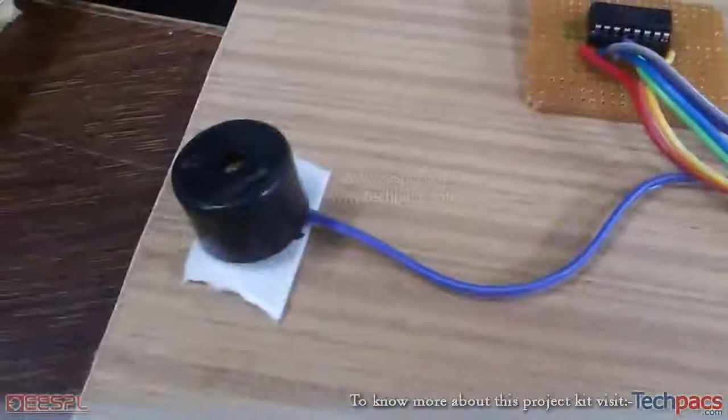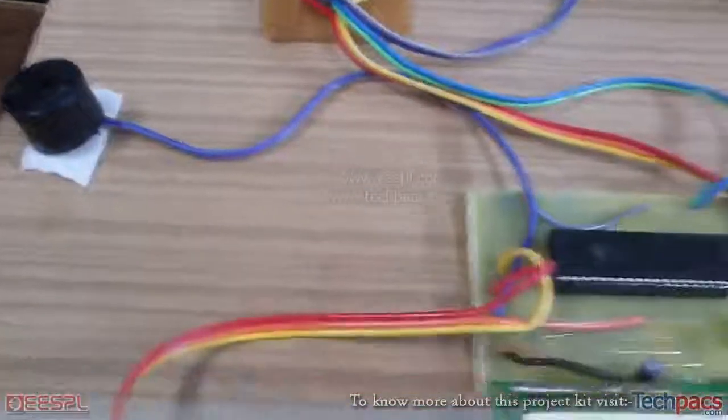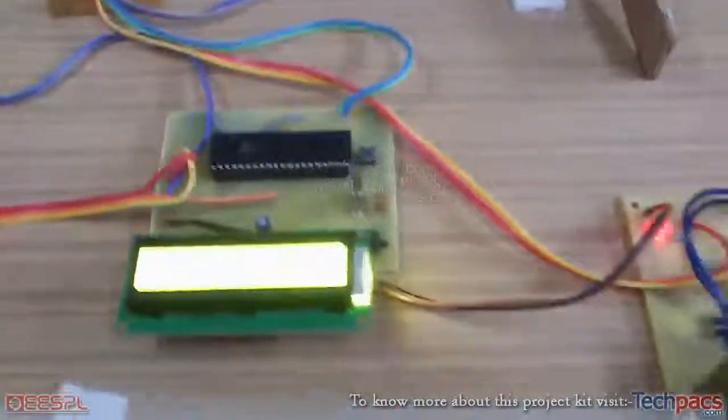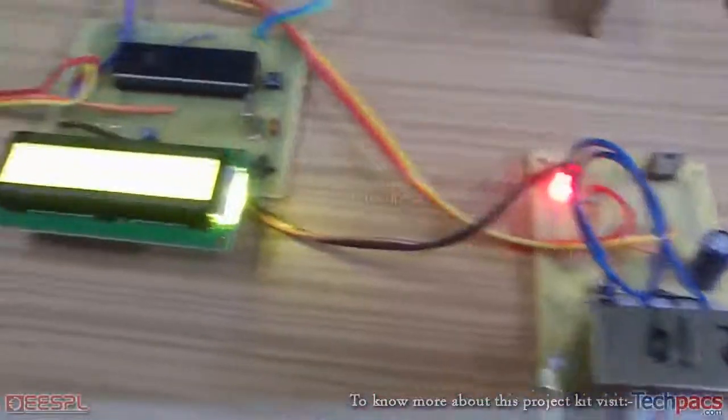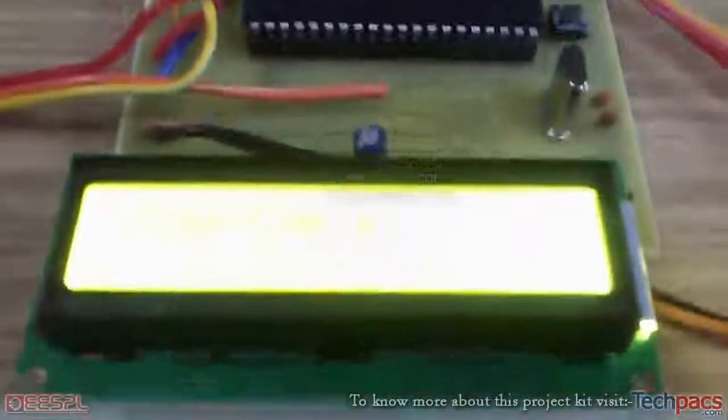A buzzer is used to alert in case of wrong access or the wrong card, and this power supply unit is used to supply 5 volts DC to the complete section. So the LCD is displaying...